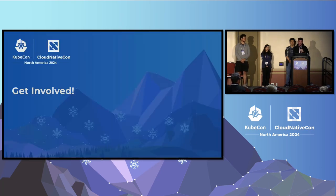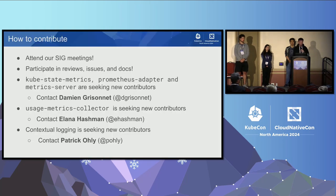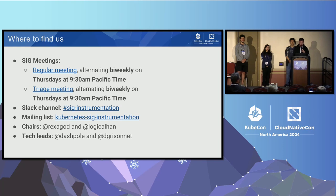Feel free to get involved — we always need help around the sub-projects and even in Kubernetes directly. To do so, you can attend our SIG meetings. We have a meeting every week: every two weeks it's a triage or SIG meeting between all of us to discuss new initiatives, issues, and so on. If you want to be involved in any of the sub-projects, I've shared some contacts. The meeting time is usually 9:30 AM Pacific time, bi-weekly. You can also directly reach out to any of us if you have any question, and there is a Slack channel where you can interact with us.